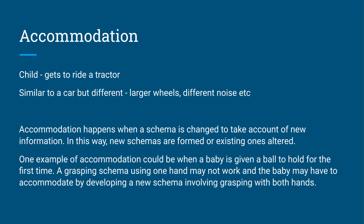Another example of accommodation would be the first time a baby is given a ball. Their grasping schema - that thing they're born with, using one hand to grab something - might not work with the ball. The baby may have to accommodate that by developing a new schema. They might need to create a whole new schema to hold a ball, involving using both of their hands. So that's the difference between accommodation and assimilation.